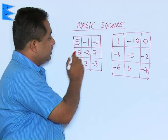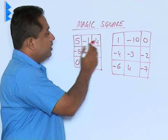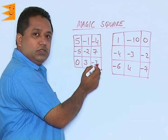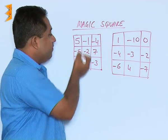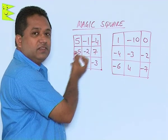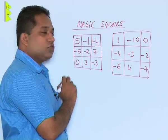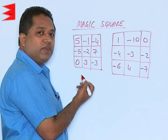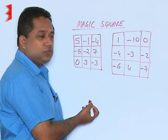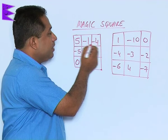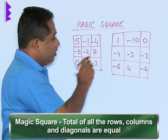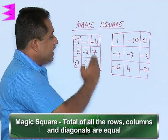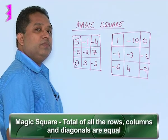If you look at this, these are the rows. We have 1, 2, 3 rows and we have 3 columns. That is why we say this is a 3 by 3 magic square. We can have a 4 by 4 magic square or a 5 by 5 magic square. But what happens in a magic square is the total of all the rows and the columns and the diagonals should all be equal.